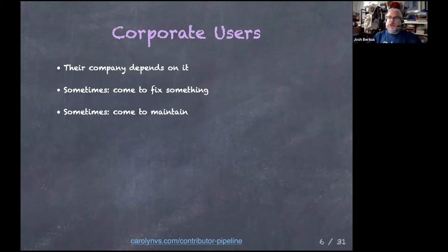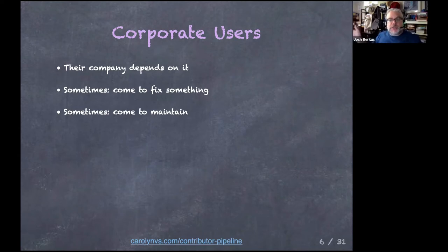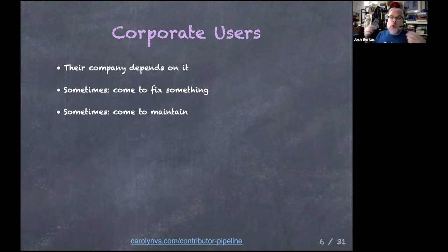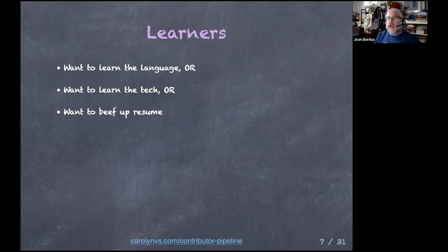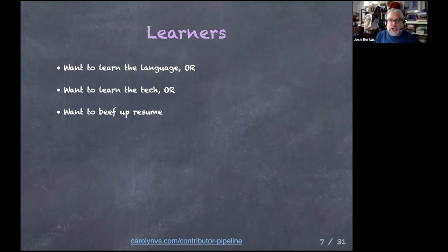In the CNCF, we get a lot of a second kind: corporate users, where a company depends on the project and assigns an employee to work on it—to add functionality, fix something, or help maintain the project long term. A third group people often forget is learners. Maybe they want to learn the programming language, the field of technology, or beef up their resume before graduating. These people will contribute to non-commercial areas of your project, so you should cultivate them.